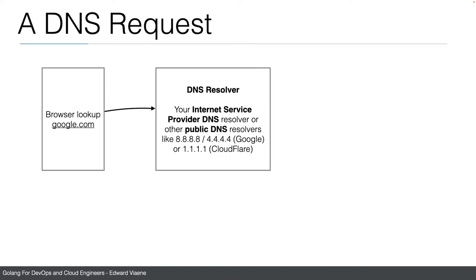Google provides a public DNS server you can set up and use instead of your internet service provider's resolver. You can also use 1.1.1.1, which is maintained by Cloudflare. You can set up these IP addresses as your DNS resolver, and then you'll be able to resolve host names. Every time your browser goes to google.com and doesn't know the IP address yet — because once you know it, you can cache it — it will make a call to this DNS server.